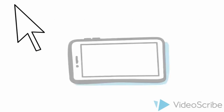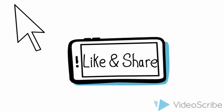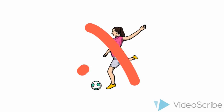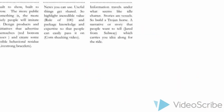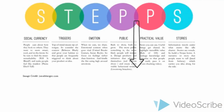Unless someone coincidentally clicks on it, enjoys it, and shares it — in other words, does the promotion for you. Someone needs to get the ball, or the video, rolling, or it won't go anywhere and most certainly not viral. I would suggest adding an additional P to the STEPS framework: P for promotion.